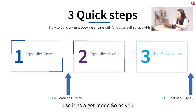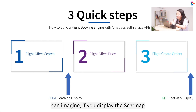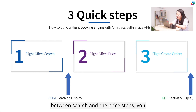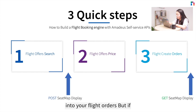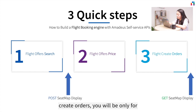If you want to display the seat map after the flight order is created, you use the GET method. If you display the seat map between the search and price steps, you can include selected seats into your flight orders. If you display the seat map after creating orders, it is for information only.